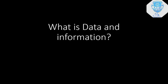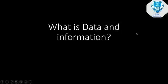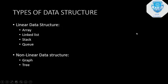A data structure can be defined as a logical or mathematical model. In computer science, two important things are logical and mathematical thinking. Data structure is what we learn to implement. So, types of data structures — there are two main types: linear data structure and non-linear data structure.